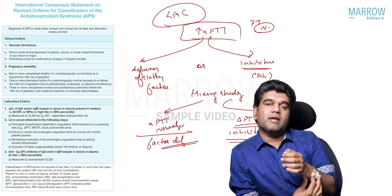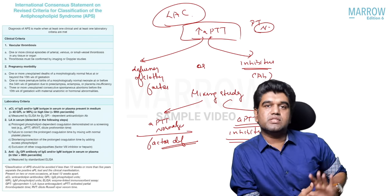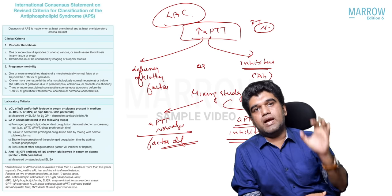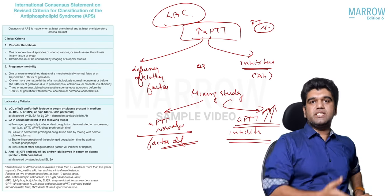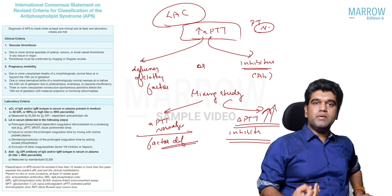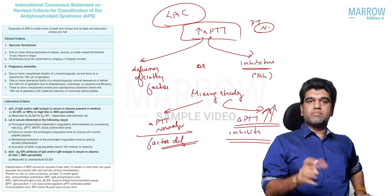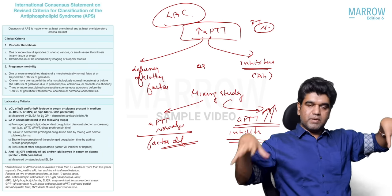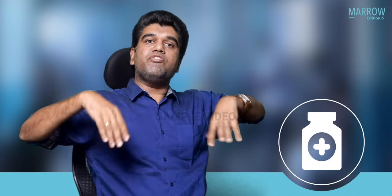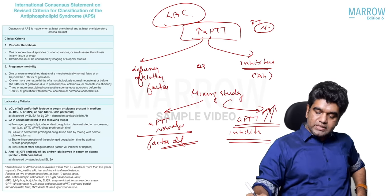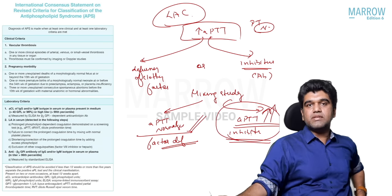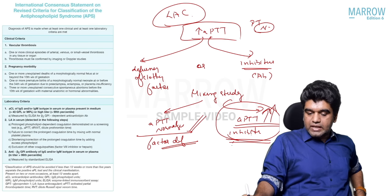APTT prolongation can be due to factor deficiency — factor 8, factor 9, factor 11 — or due to inhibitors and antibodies, of which LAC is a perfect example. If APTT normalizes after mixing study, it is a factor deficiency. If APTT remains prolonged, it is very likely to be LAC. Confirmation: APTT corrects upon adding excess phospholipid, confirming LAC.